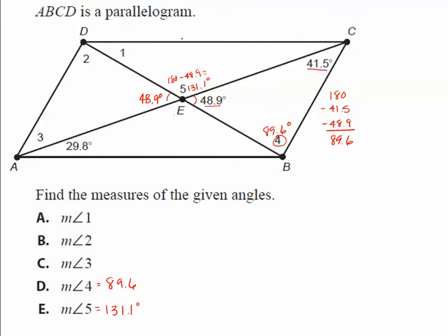Since opposite sides of a parallelogram are parallel, diagonal DB acts as a transversal. Angle 1 is congruent to its alternate interior angle, and angle 2 is congruent to angle 4, so angle 2 is also 89.6°. For angles 1 and 3: looking at the congruent triangles, angle 3 matches 41.5°.